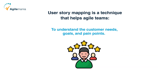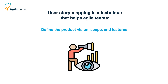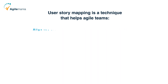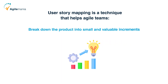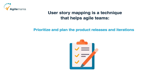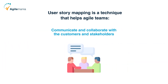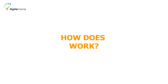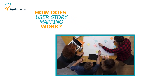User story mapping helps agile teams to understand the customer needs, goals, and pain points; define the product vision, scope, and features; align the product strategy with the business objectives; break down the product into small and valuable increments; prioritize and plan the product releases and iterations; and communicate and collaborate with the customers and stakeholders.